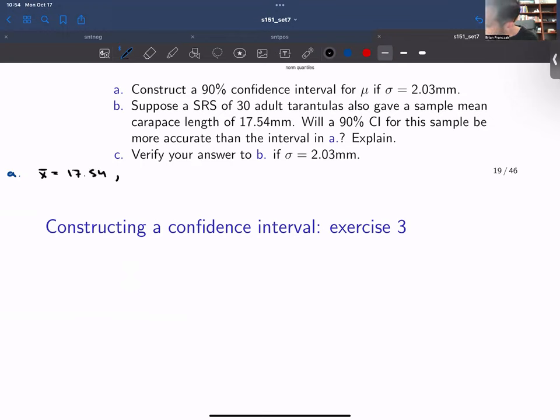We are told the sample size is 15. So we have to check the assumptions of our confidence interval. The first assumption is that a simple random sample was collected, and we know this is true because the description of the problem says a simple random sample of 15 adult tarantulas.